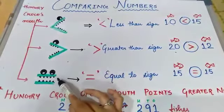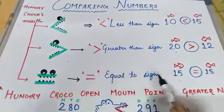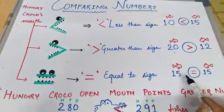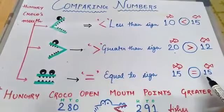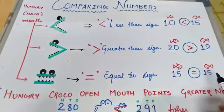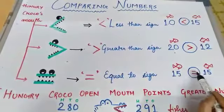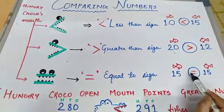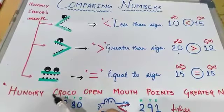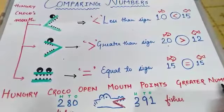Now this is equal to. Na hi bada hai na hi chota hai, to equal hai. How many are there? 15 fishes. Here is 15 fish and here is 15 fish. So he can eat both, this tanki fish will eat or this tanki fish. Both of them are 15, so his mouth is equally open. So this is the equal to sign.